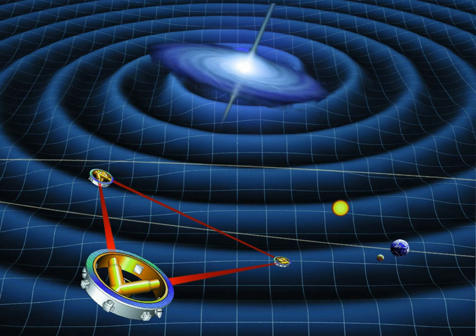LISA will also search for currently unknown sources of gravitational waves. The history of astrophysics has shown that whenever a new frequency range, medium of detection is available, new unexpected sources show up. This could for example include kinks and cusps in cosmic strings.